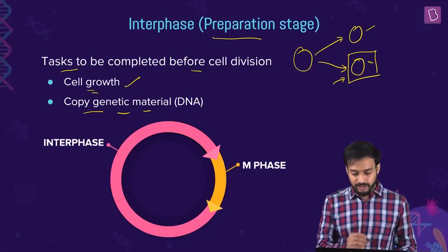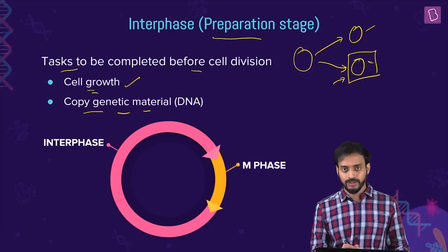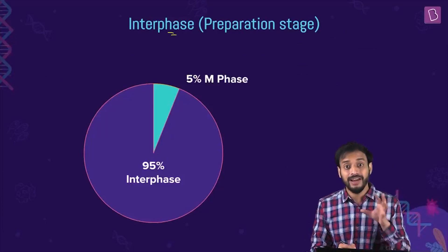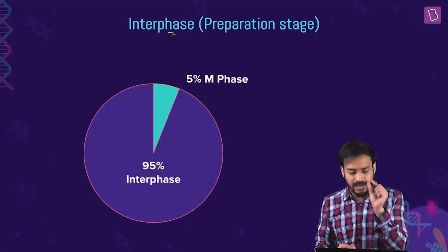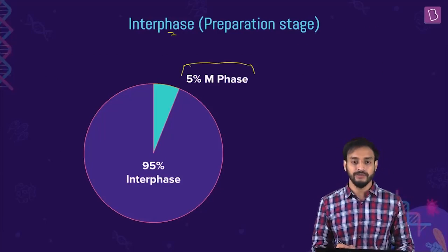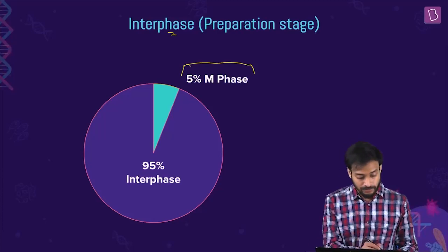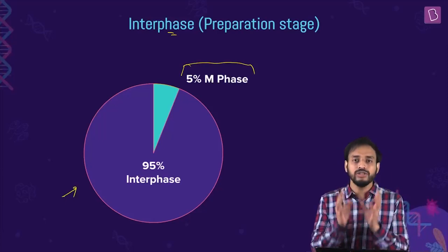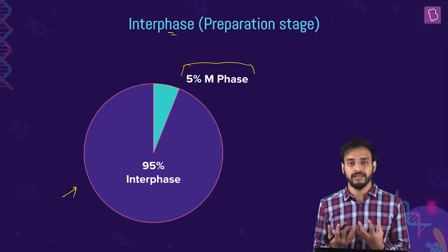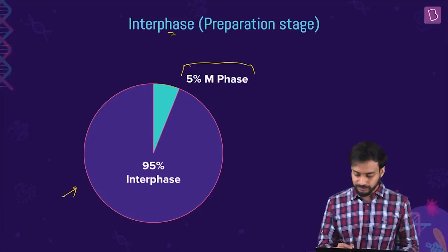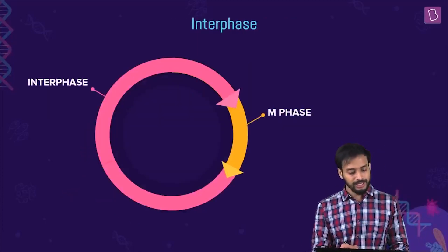The essential steps in interphase are cell growth and copying of DNA. Interphase occupies 95% of the cell cycle, while the actual division — the M phase — comprises only 5%. So the cell spends maximum time preparing for division, and the division phase is just 5% of the cell cycle.